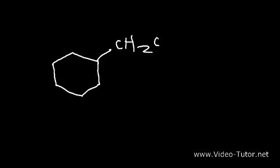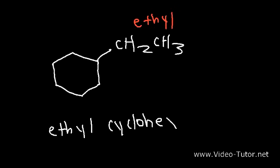Now let's say we have a six-carbon ring with two carbons outside of it — what is the name of this compound? As a substituent, this group is known as an ethyl group since it contains two carbons. For reference: one carbon is methyl, two is ethyl, three is propyl, four is butyl, five is pentyl, six is hexyl, seven is heptyl, eight is octyl, nine is nonyl, ten is decyl. The name for this compound is called ethylcyclohexane.